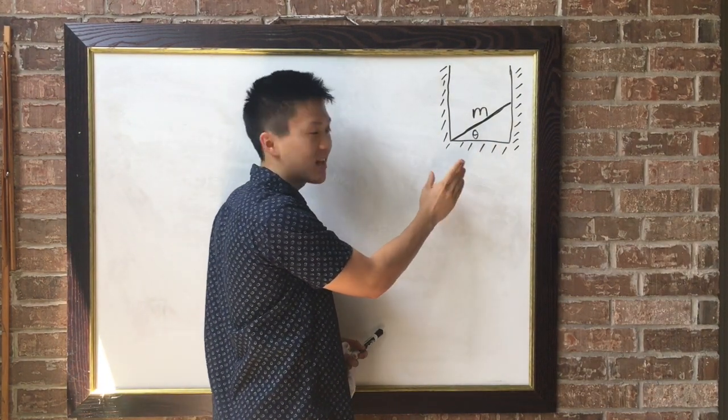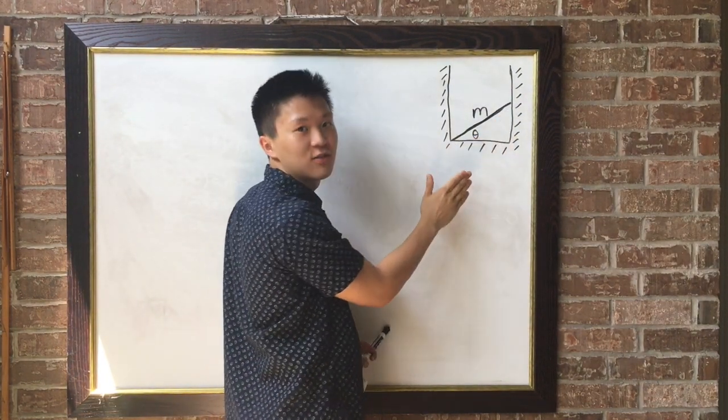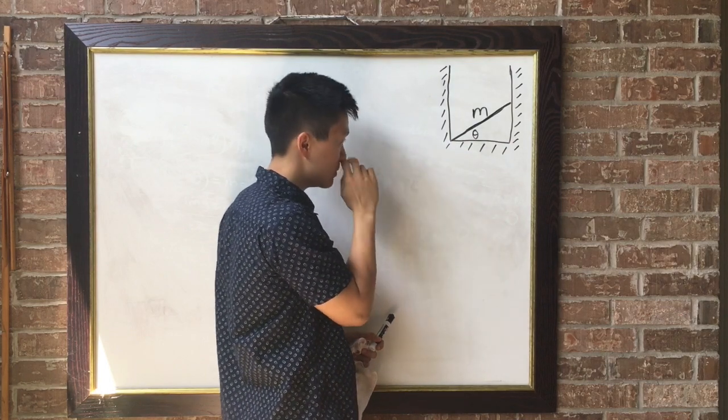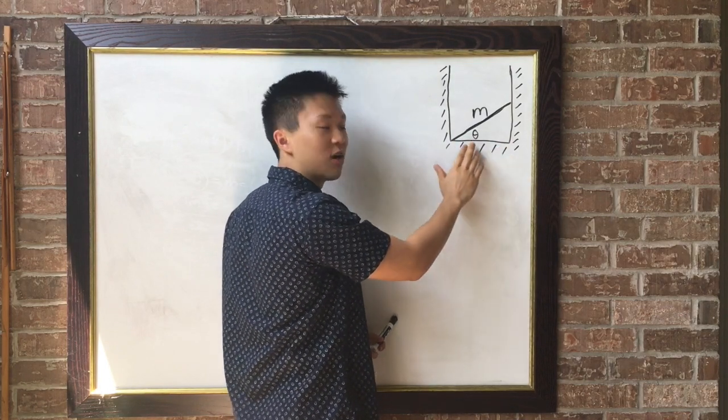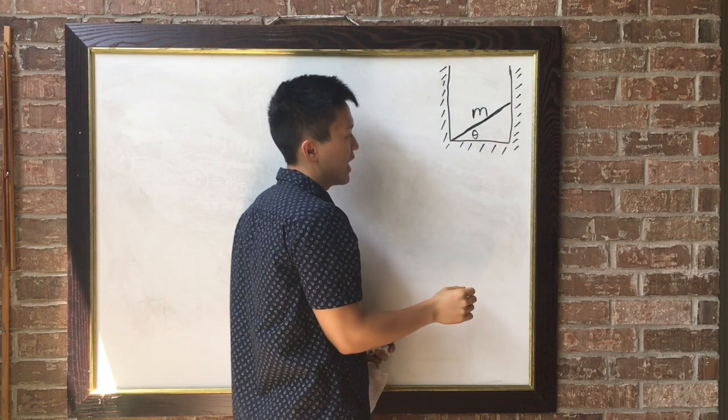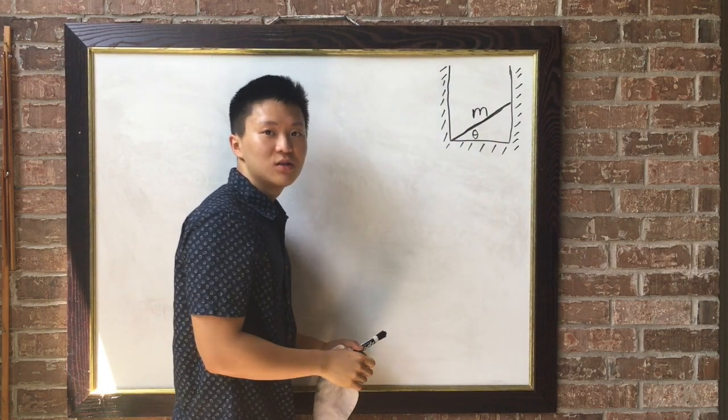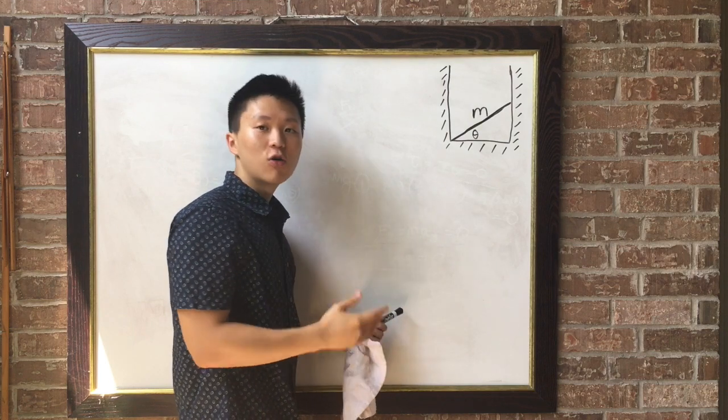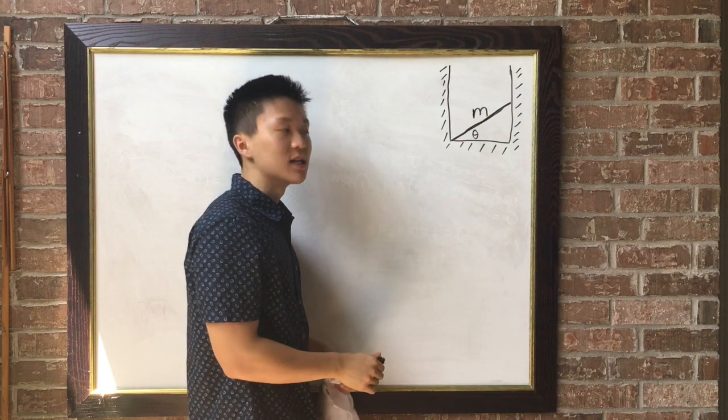We have a stick with uniform mass m lying inside of a frictionless well. The stick makes an angle of theta with the horizontal, and the question asks to solve for all the forces acting on the stick.